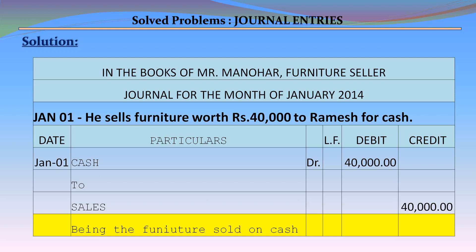January 1 – He sells furniture worth Rs. 40,000 to Ramesh for cash. Journal entry: Cash Account debit Rs. 40,000 to Sales Account credit Rs. 40,000, being the furniture sold for cash.